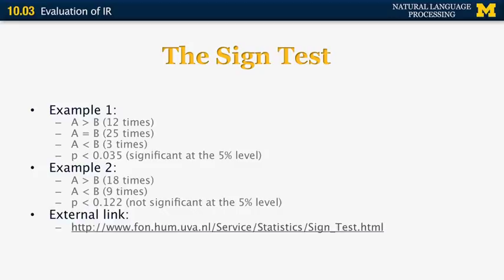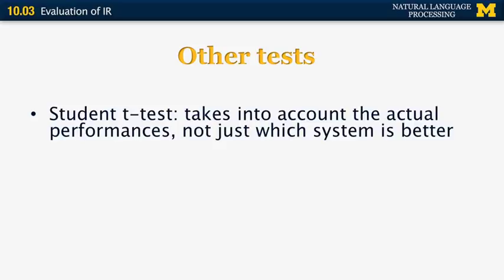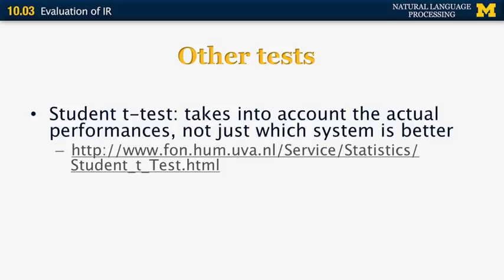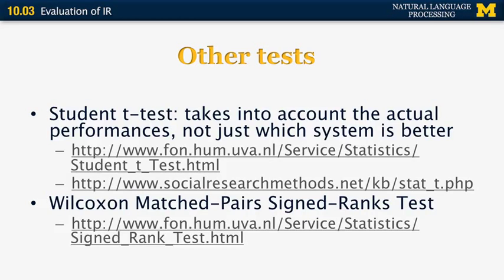There are other tests that don't just look at the sign of the difference between two systems but at the actual magnitude of the difference. One is the t-test or Student's t-test, with an external calculator available. Another test used a lot in information retrieval is the Wilcoxon matched pairs sign ranks test, with a calculator link included as well. This concludes the section on evaluation of information retrieval systems.